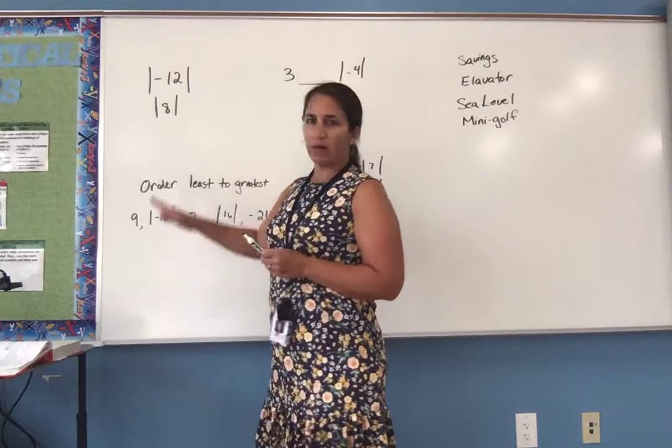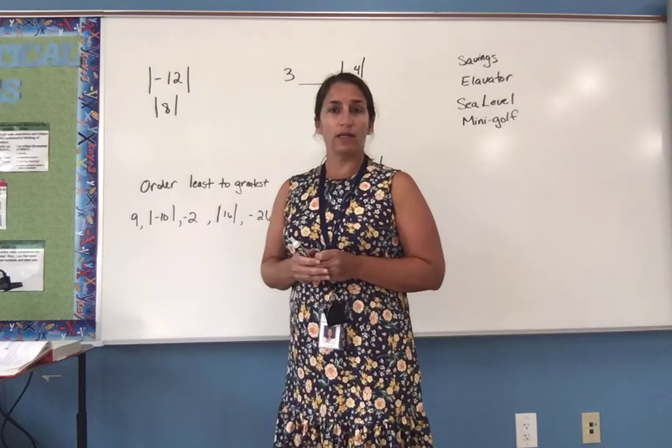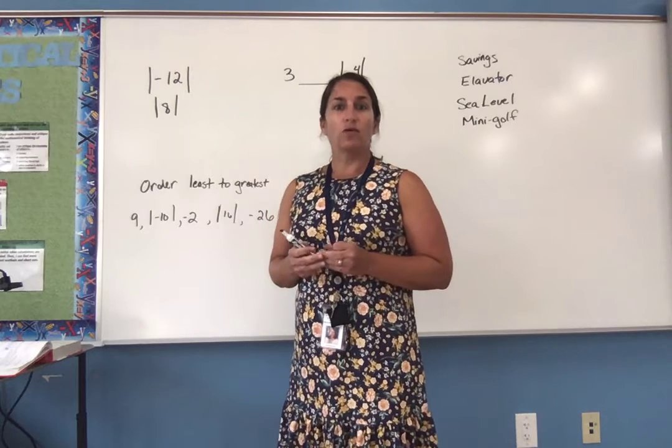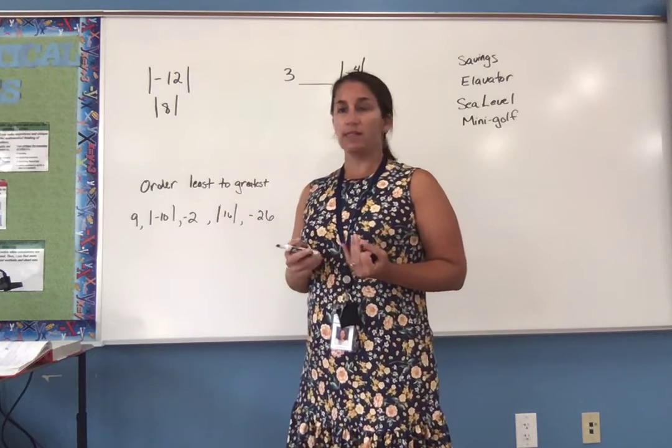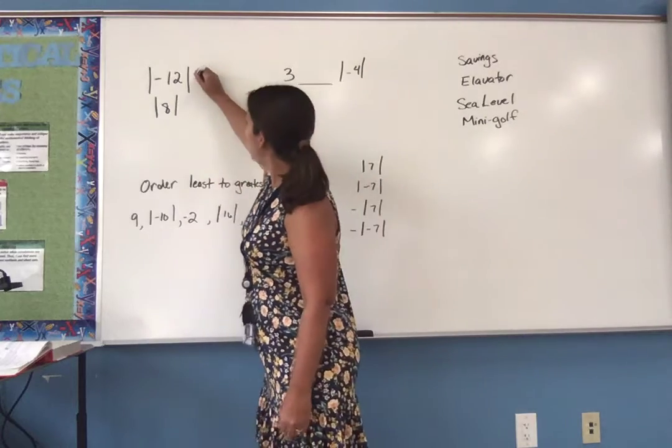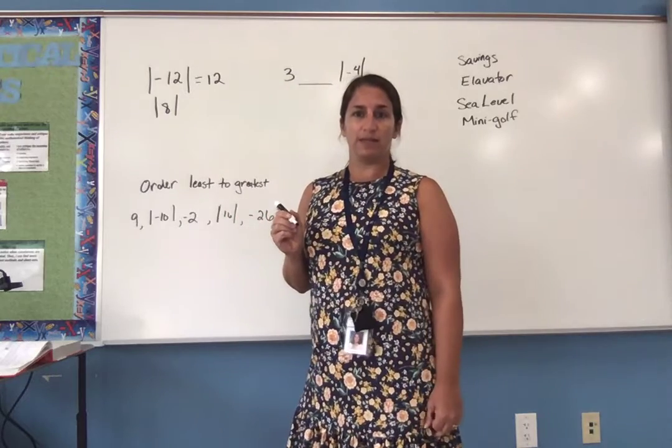There are several problems towards the beginning of the assignment where you are just evaluating an expression that has an absolute value symbol in it. We know that absolute value is the distance from zero. So for example, if we have the absolute value of negative 12, the distance from zero is 12 spaces.